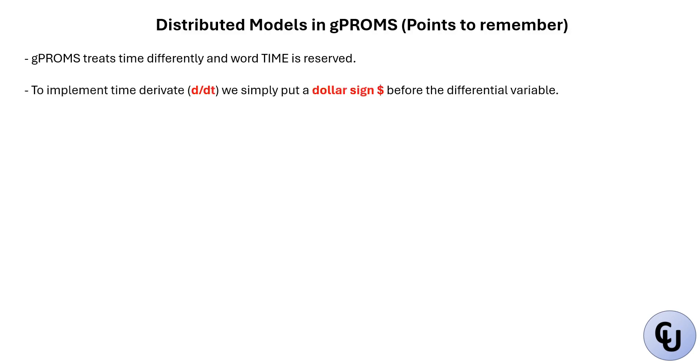To implement time derivative, if you have d/dt of a variable in your model, you simply put a dollar sign before the differential variable. So if you have dv/dt, then to write dv/dt in gPROMS, you simply do dollar sign v. The d/dt operator itself is represented as dollar sign in gPROMS. For example, if you have the equation dz/dt equals minus vz plus xy, it is written as dollar sign z equals minus v times z plus x times y.